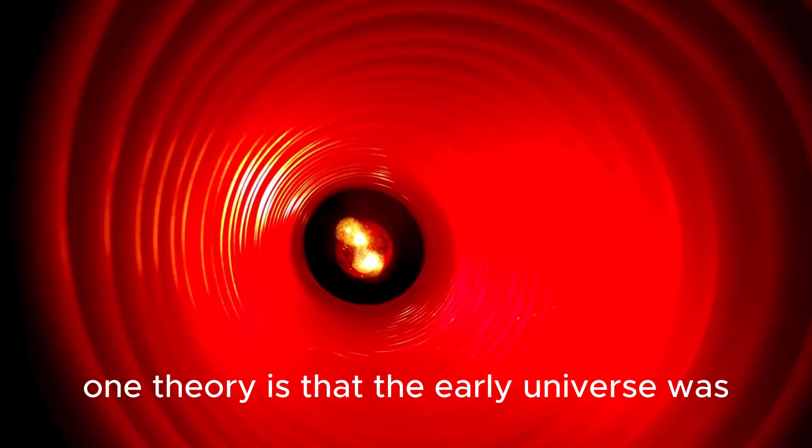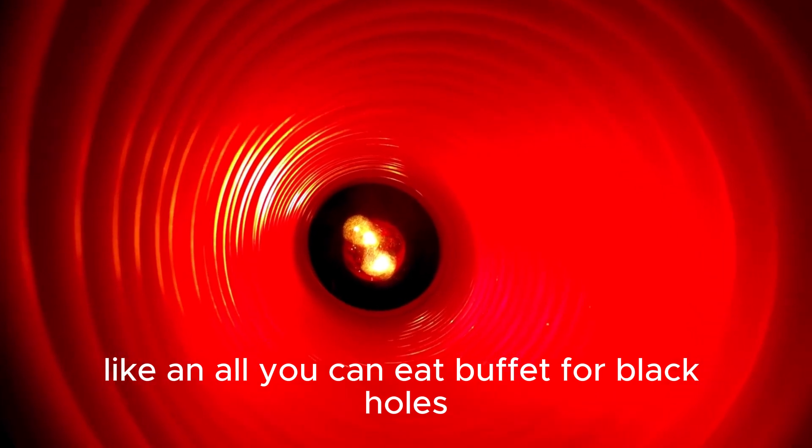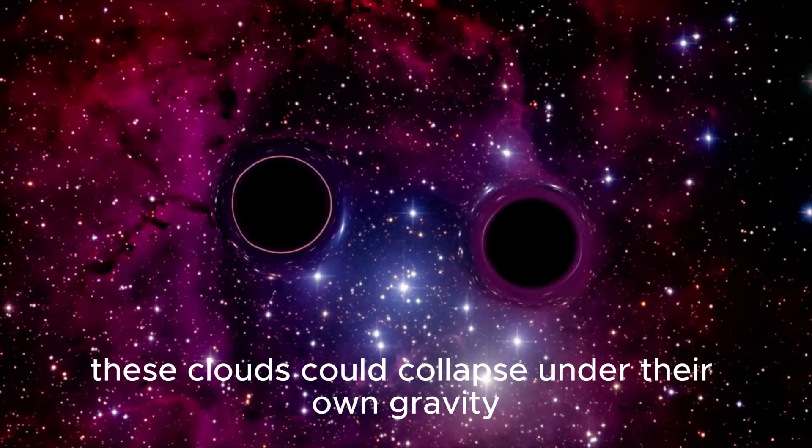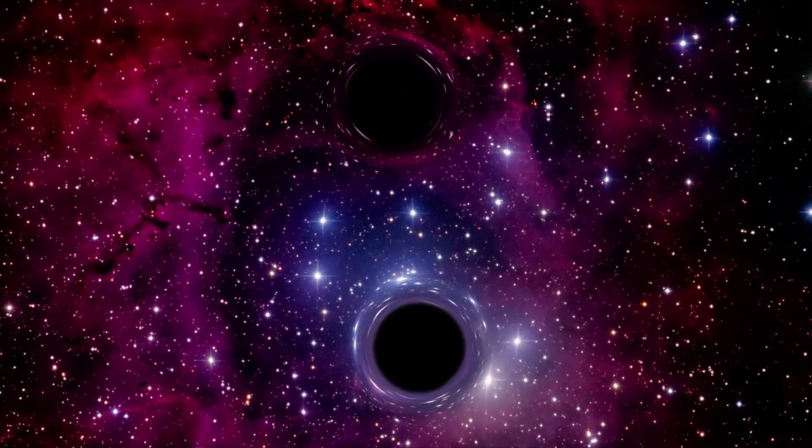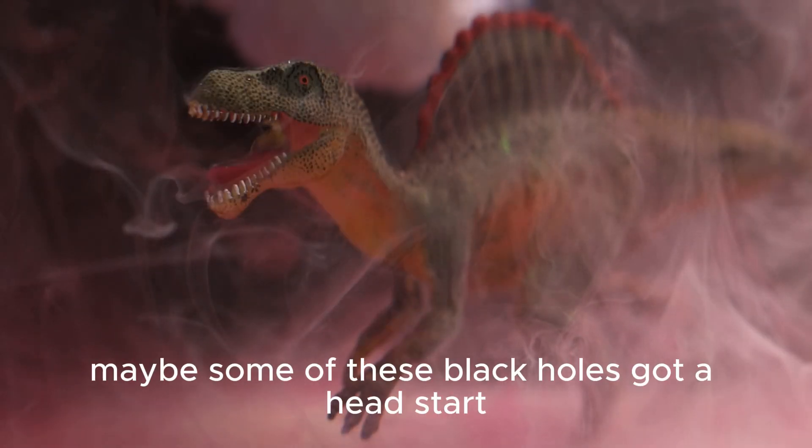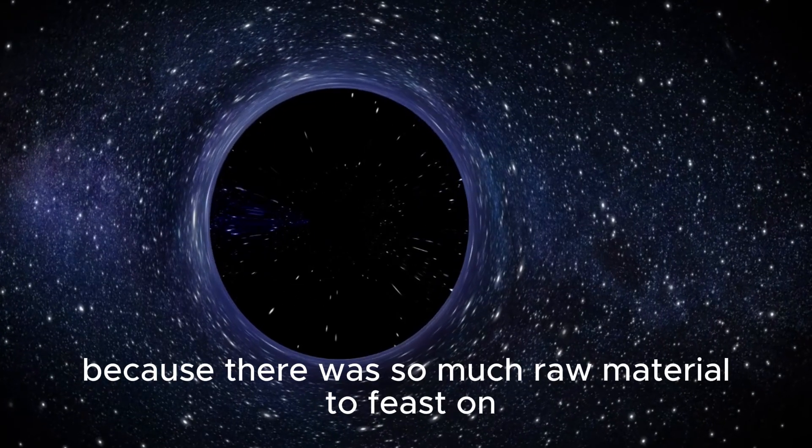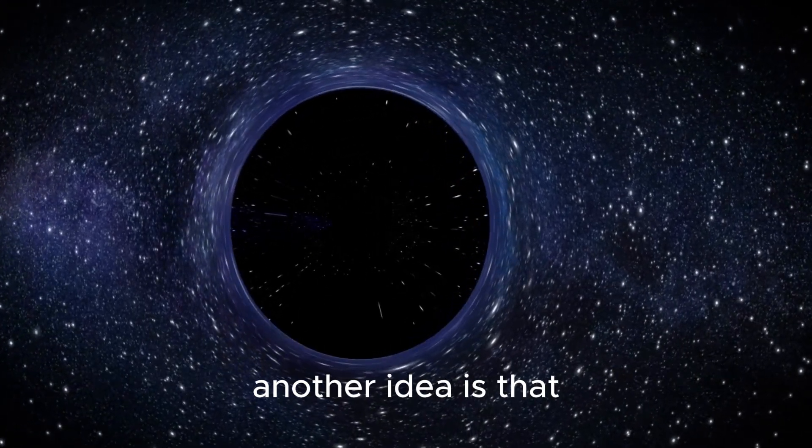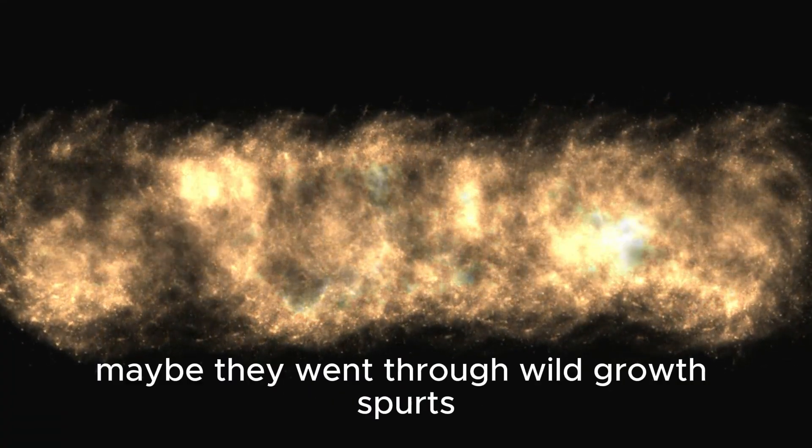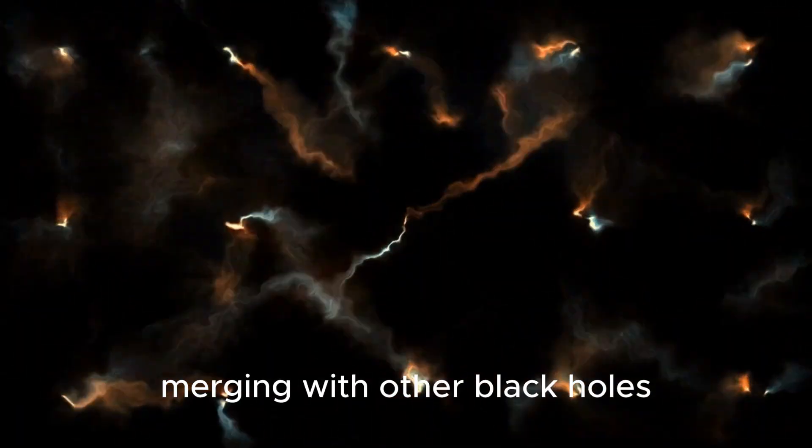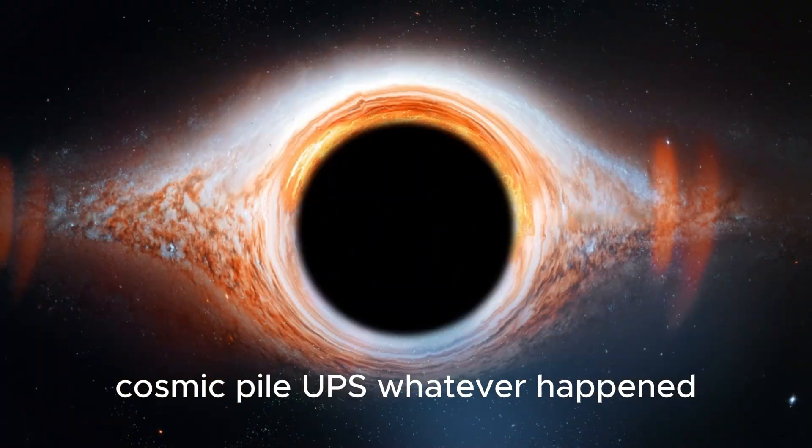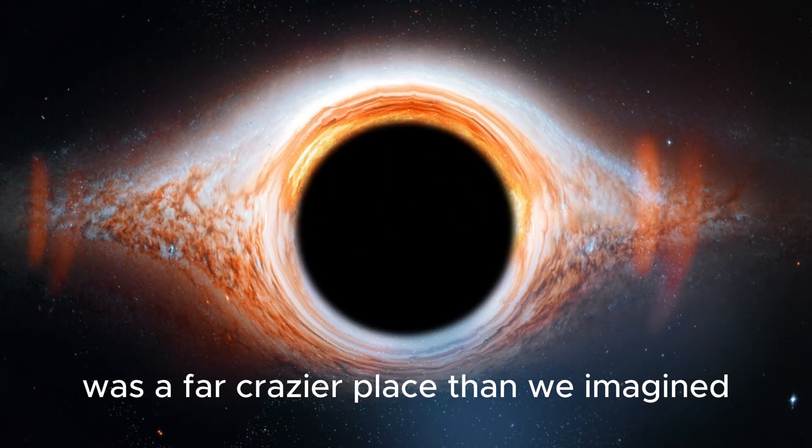One theory is that the early universe was like an all-you-can-eat buffet for black holes. Picture this. Right after the Big Bang, the universe was dense with gas clouds. These clouds could collapse under their own gravity, forming stars and black holes at a breakneck pace. Maybe some of these black holes got a head start, growing massive in just a few hundred million years because there was so much raw material to feast on. Another idea is that these early black holes didn't grow slow and steady like we thought. Maybe they went through wild growth spurts, merging with other black holes or swallowing entire star clusters in chaotic cosmic pileups. Whatever happened, it's clear the early universe was a far crazier place than we imagined.